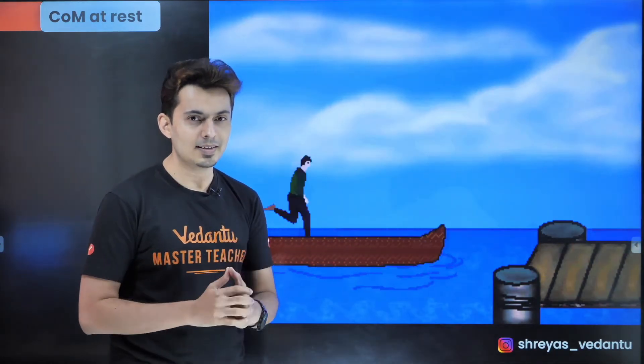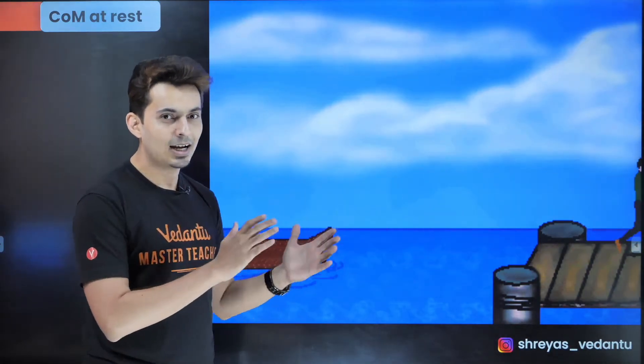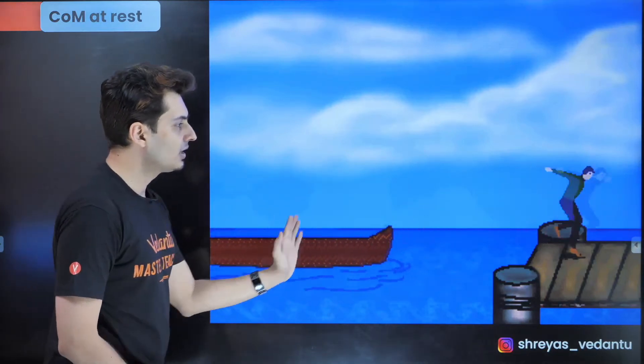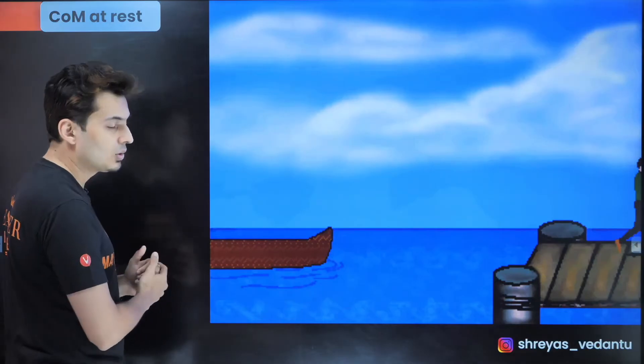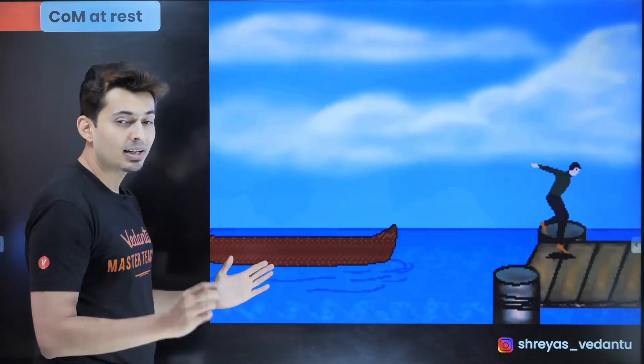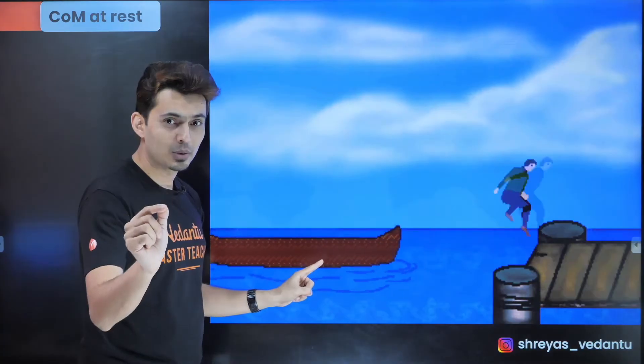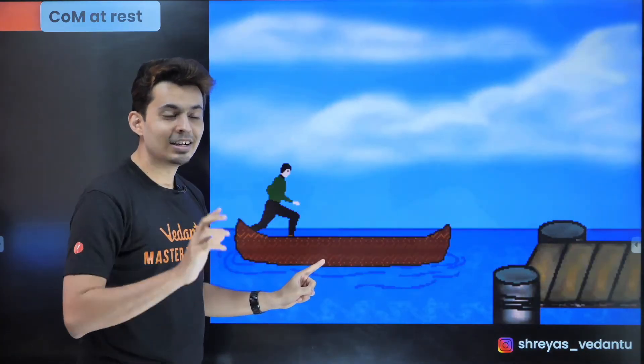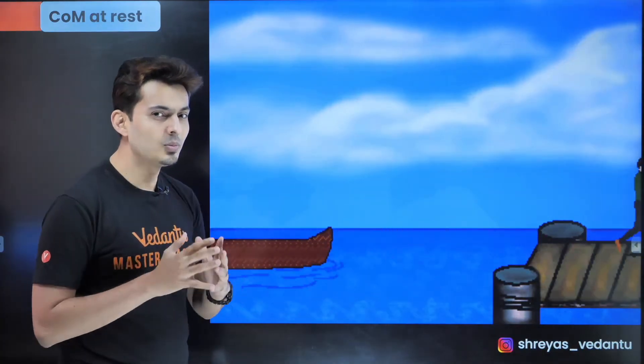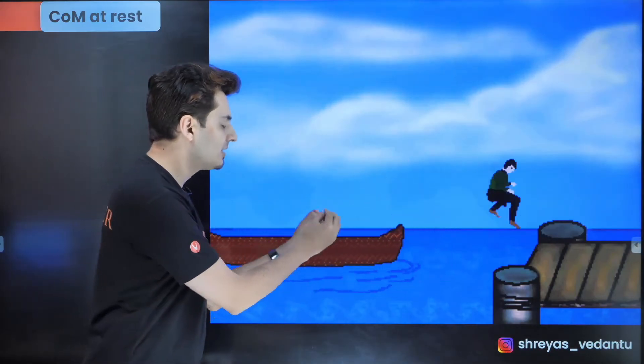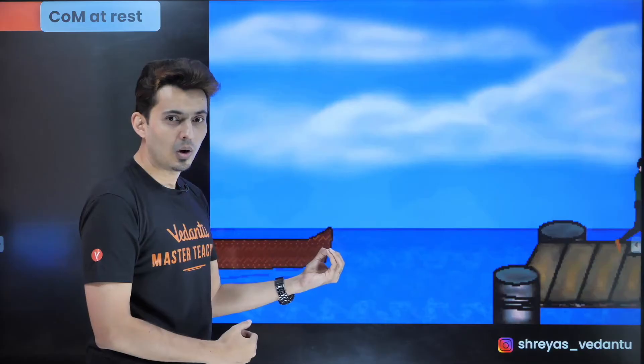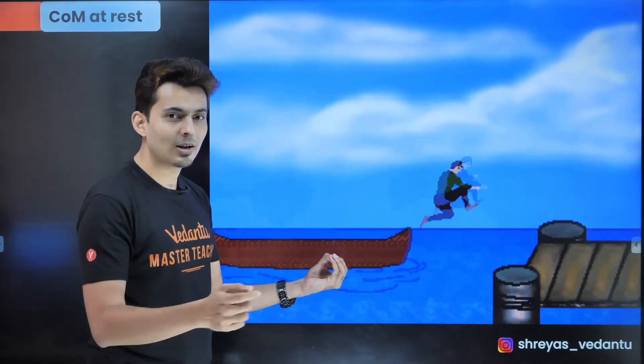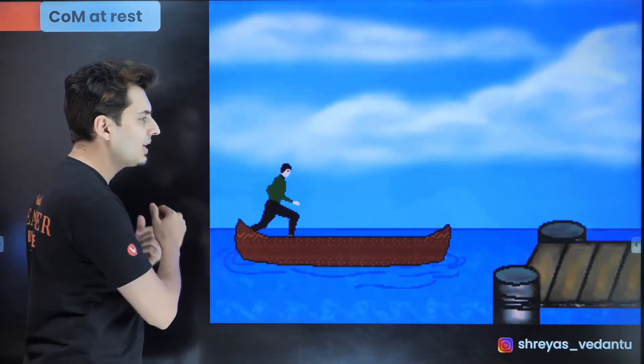So if the person jumps or moves to one side the boat recoils to the other side and remember in this problem the person applies some force on the boat which is internal. The external forces are assumed to be absent and that's why the center of mass stays there so if you know how much the person has moved on to one side you can quickly figure out how much did the boat move on to the other side.